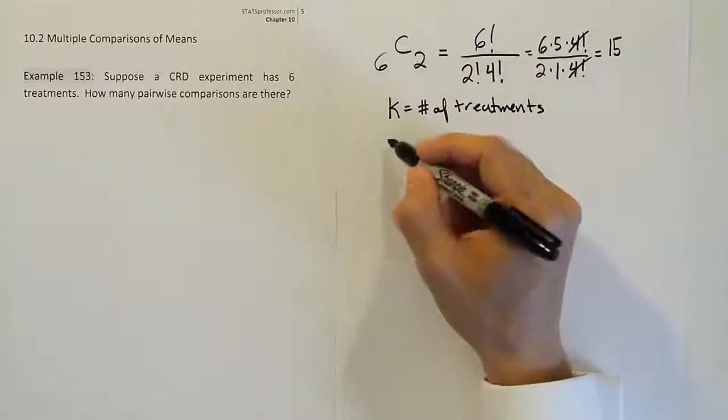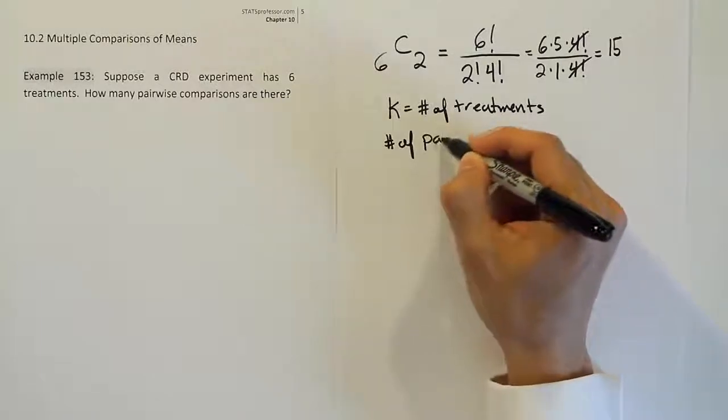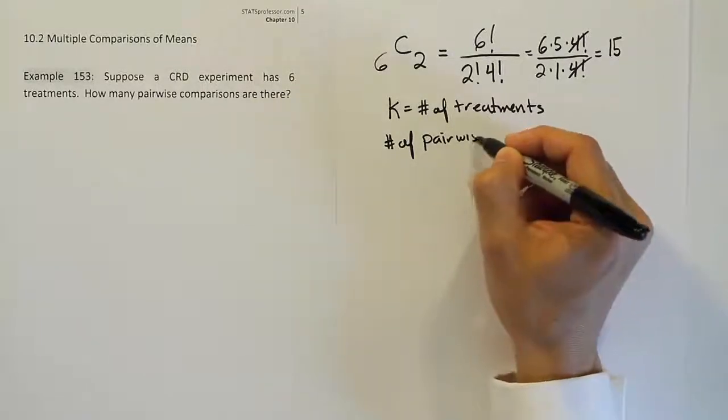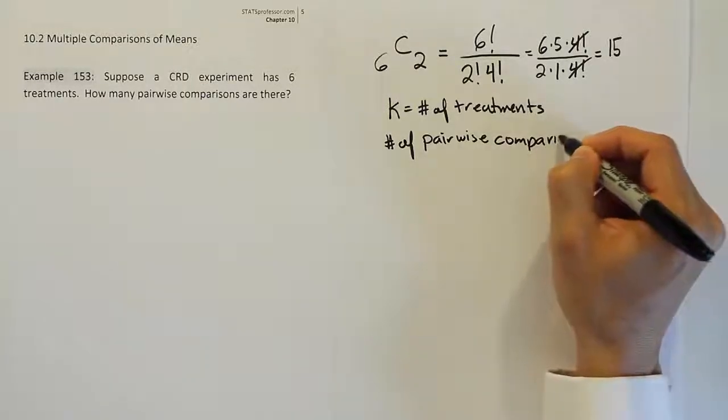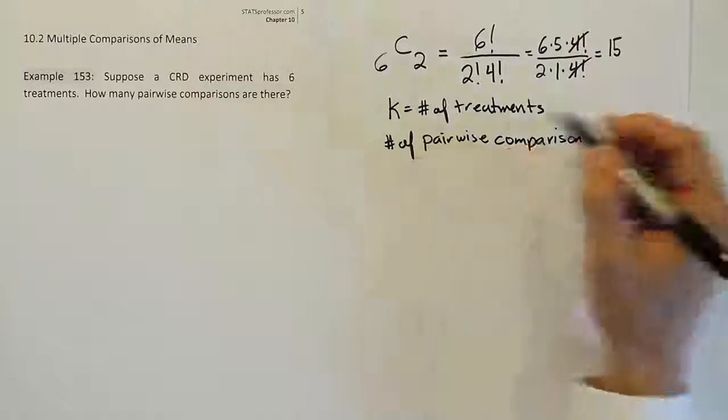then you can say the number of pairwise, that means two at a time, pairwise comparisons that will end up working out to be